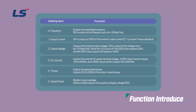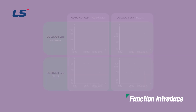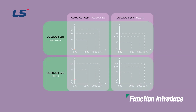The same applies to analog output. Various AC drive operation information such as output frequency and output current can be converted to voltage or current and output through analog output terminals such as the AO terminal. You can also adjust the size of the actual output voltage or current according to the output value.